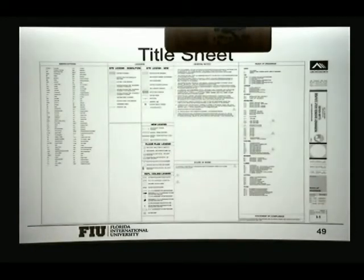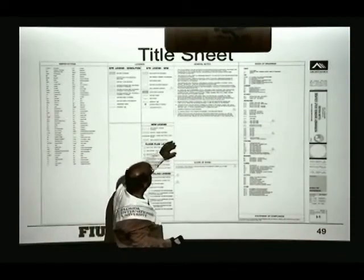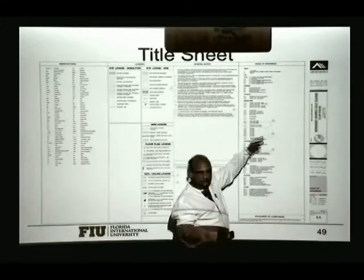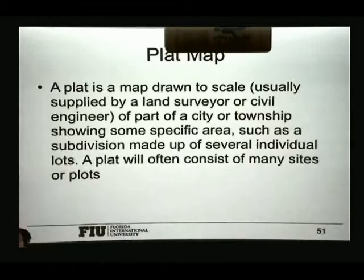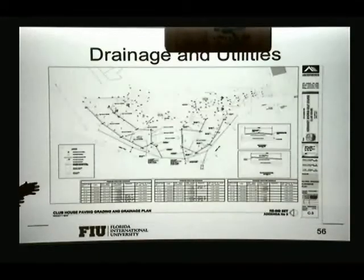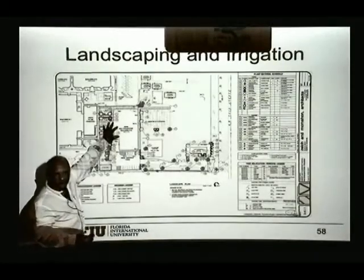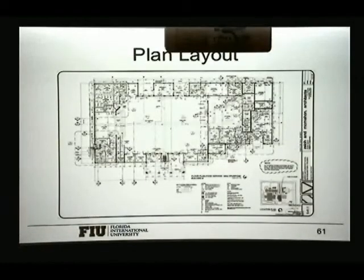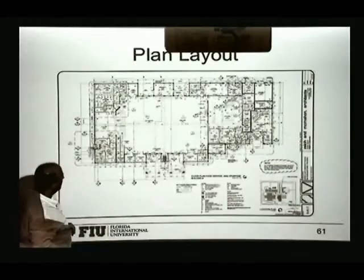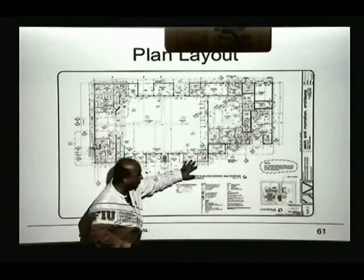Construction drawings normally include a title sheet that tells you where the abbreviations are, different types of patterns used, and different types of lines used in the drawings. They give us a list of drawings we'll be using. We may get demolition plans, topography plans, drainage and utilities, and plans showing where things will be located. We are going to work a lot on the plan layout — this is a cut of the building viewed from above — so we need to be very familiar with the different lines, symbols, legends, and notes from these plans.